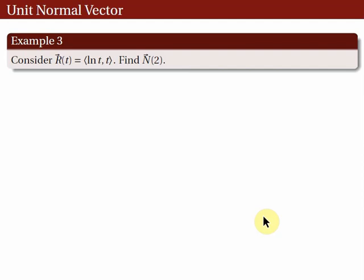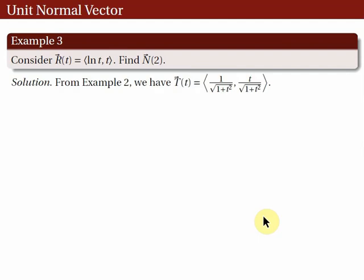Consider r(t) = ⟨ln t, t⟩. Find N(2). To get N(2), we need T'(t) and the norm of T'(t) at t = 2. From example 2, we already have a vector equation for the unit tangent vector T(t).